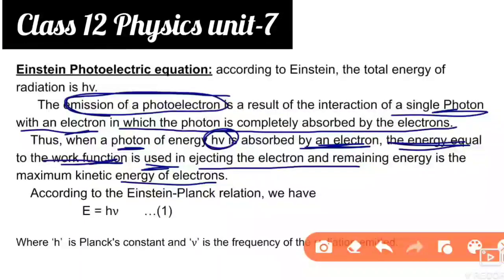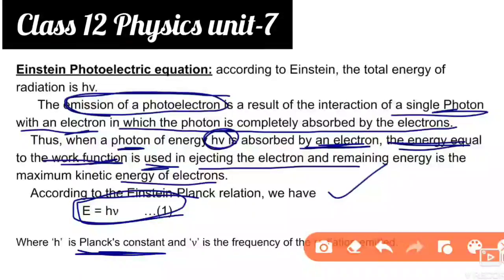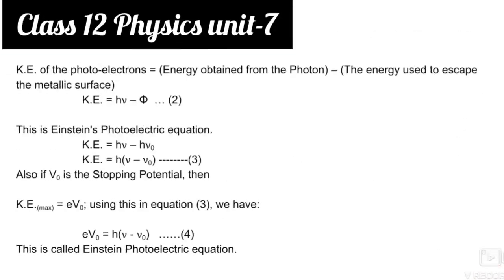The remaining energy after ejecting the electron is equal to the maximum kinetic energy. According to Einstein's equation: hμ = kinetic energy of the photoelectron plus the energy used to escape the metallic surface. The kinetic energy of the photoelectron equals the energy obtained from the photon minus the energy used to escape the metallic surface.